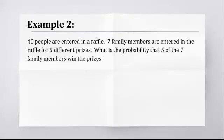Second example, 40 people are entered in a raffle. Seven family members are entered in the raffle for five different prizes. I don't mean a family of seven, like with two parents and five kids. It could be that. I don't care how you interpret that. It could be like two parents, two grandparents. It could be a mom and her two parents. It could be a mom and her sister and their kids and cousins. I don't really care. Seven family members are entered in the raffle for five different prizes. The key here is the different prizes.